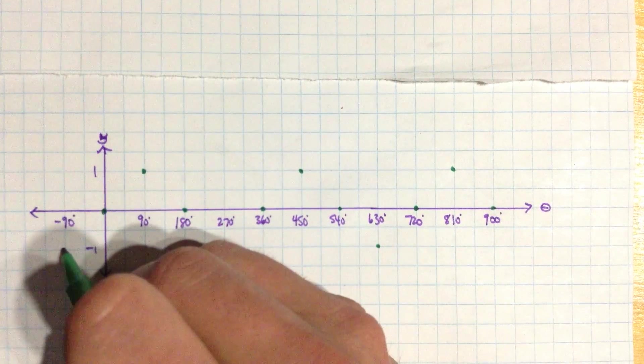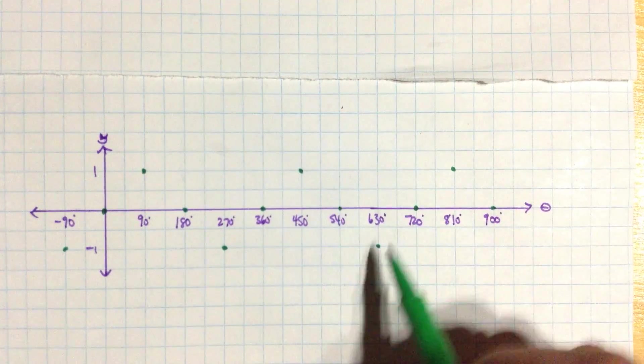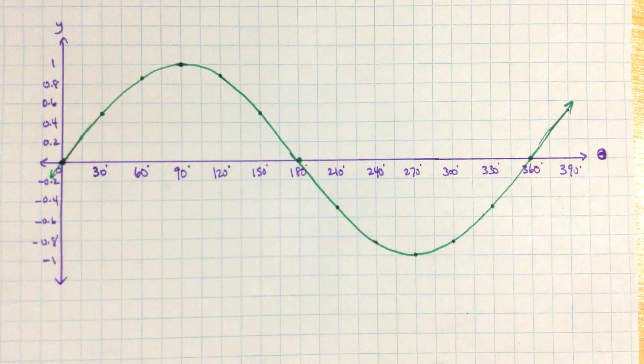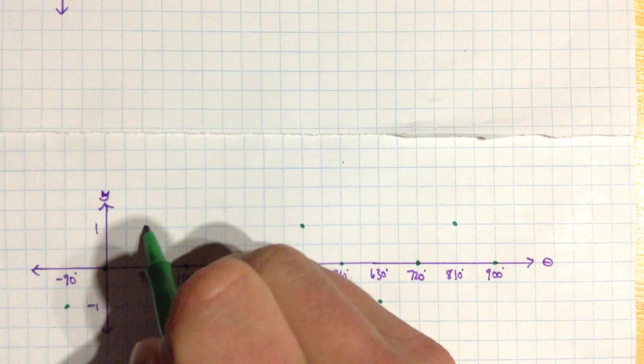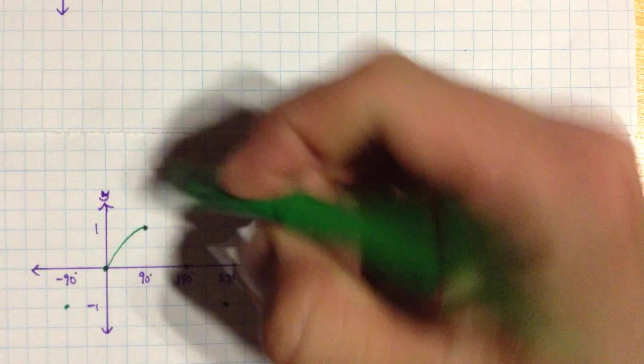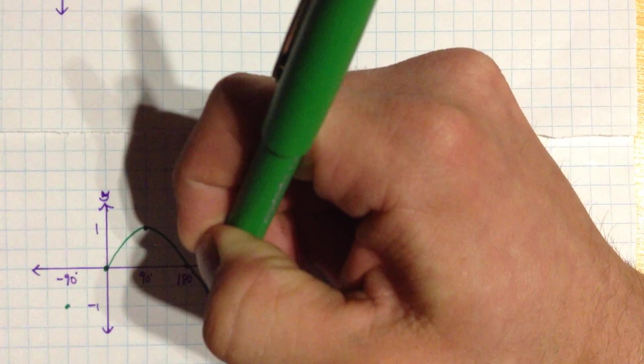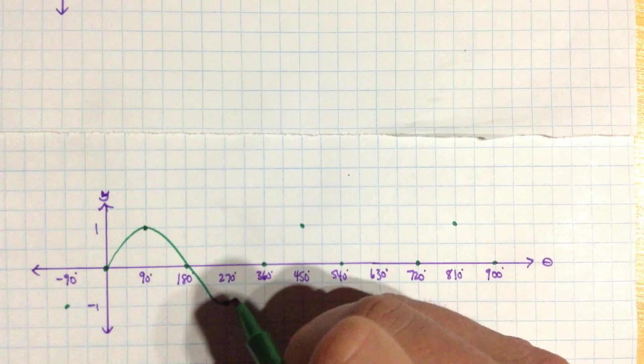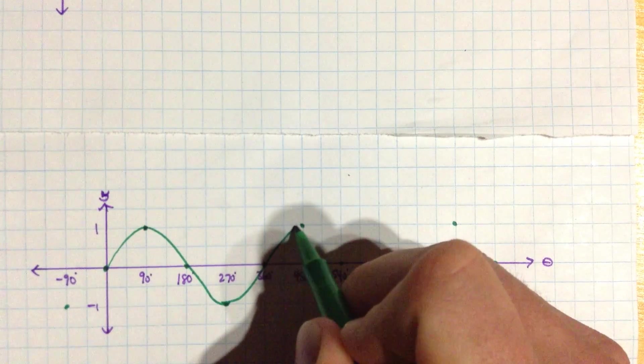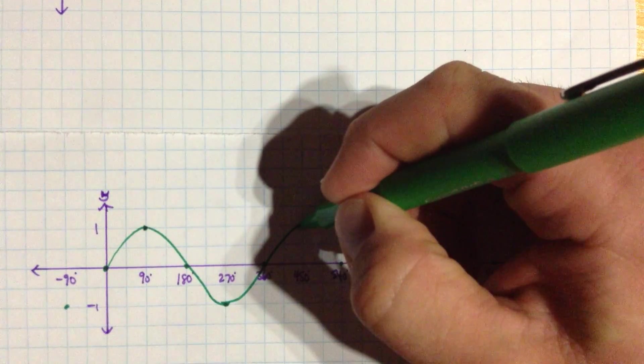And let's do one more on this side. Now, this is not a zigzag, right? It's a nice, smooth curve. And so I'll carefully draw this in. And I get this.